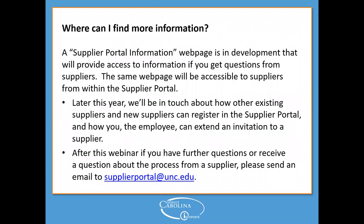We're coming towards the end of these slides, however we want to make sure you know where you can find more information. We have a supplier portal information web page in development that will provide access to information if you get questions from suppliers. The same web page will be accessible to suppliers from within the supplier portal as well. Later this year we'll be in touch about how existing and new suppliers can register for the supplier portal. After this webinar, if you have further questions or receive a question about the process for a supplier, please send an email to supplierportal@unc.edu and be on the lookout for email updates.